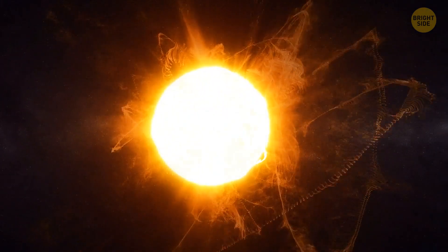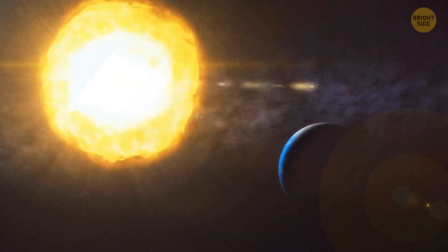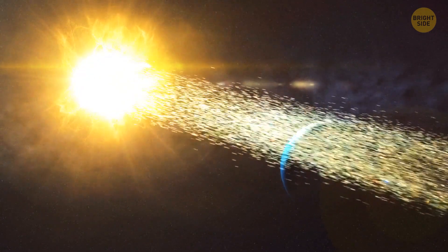Solar storms are so powerful that they could leave us in complete darkness. Back in July 2012, the strongest solar storm in over 150 years narrowly missed Earth.